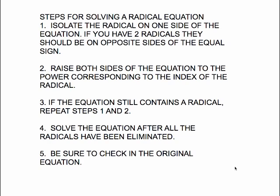Here are the steps for solving a radical equation. Number one: isolate the radical on one side of the equation — if you have two radicals, they should be on opposite sides of the equal sign. Number two: raise both sides to the power corresponding to the index of the radical — square both sides for a square root, cube both sides for a cube root, etc. Number three: if the equation still contains a radical, repeat steps one and two. Number four: solve the resulting equation, which could be a simple linear equation or a quadratic requiring factoring or the quadratic formula. Number five: always check your solutions in the original equation.